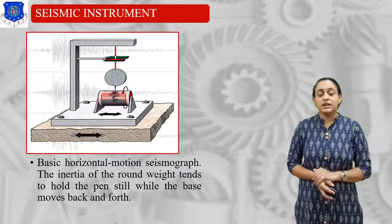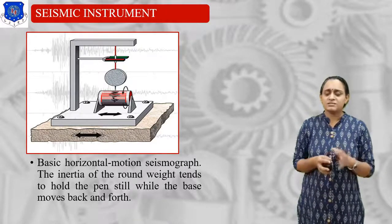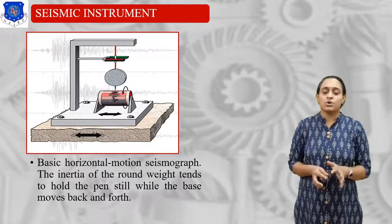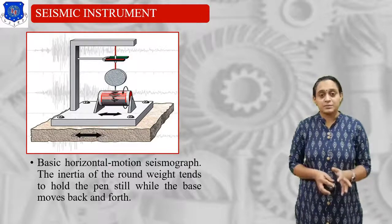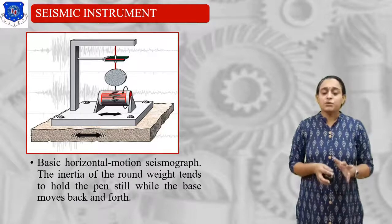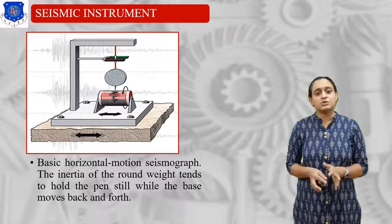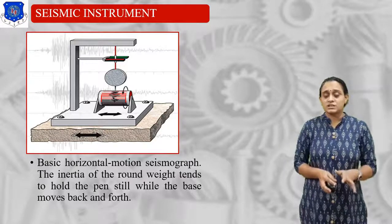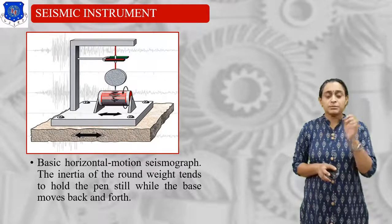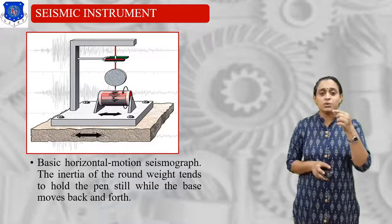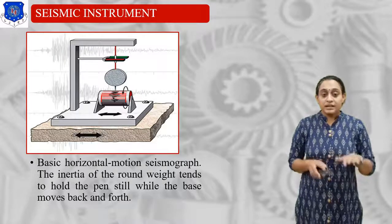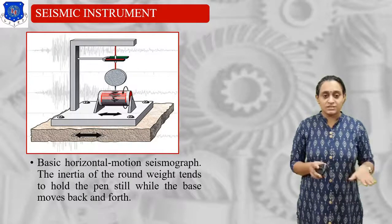Now let us start with the seismic instrument. This instrument is generally used basically for measuring the ground or earth vibration, known as earthquake. In some mechanical instruments they are used, but basically for earthquake we use the seismic instrument. As you see in this instrument, there is a drum and a rotor mounted upon the system, along with one seismic equipment attached to it. That rotor is mounted on the earth surface.